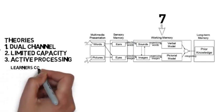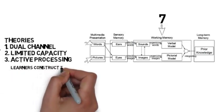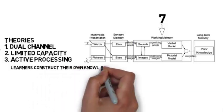And active processing is the assumption that learners construct their own knowledge. And that's an important element of Cognitivism, one of the schools in education.